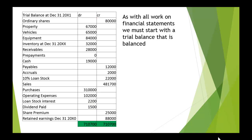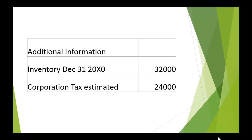As with all work on the financial statements, we must make sure that the trial balance is balanced before we start, and we can see here we have actually balanced it. We need additional information — in this case we need the inventory at the start of the year, and we need an estimate for the tax to be paid, the corporation tax. So we've got those two additional figures here.